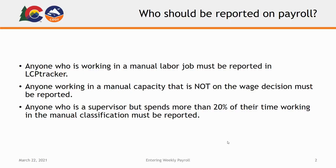I often get asked about who has to be reported on certified payroll. The answer is that anyone who is working in a manual labor job must be reported on certified payroll. Any classification on the wage decision must be reported, and anyone working in a manual capacity that is not on the wage decision must also be reported. Anyone who is a supervisor but spends more than 20% of their time working in the manual classification must be reported.